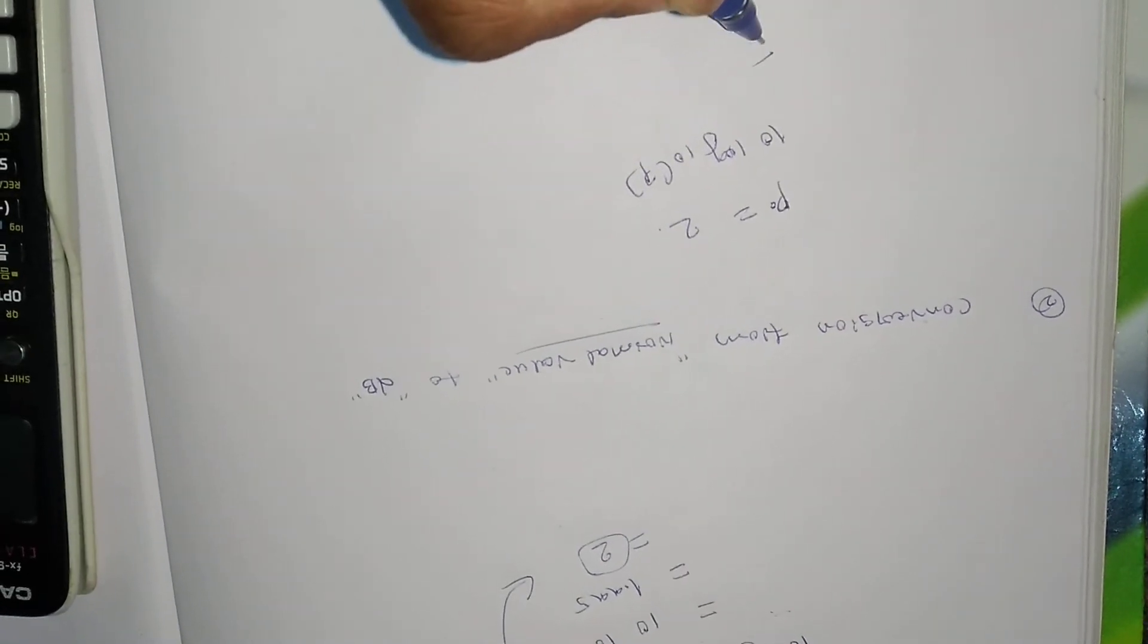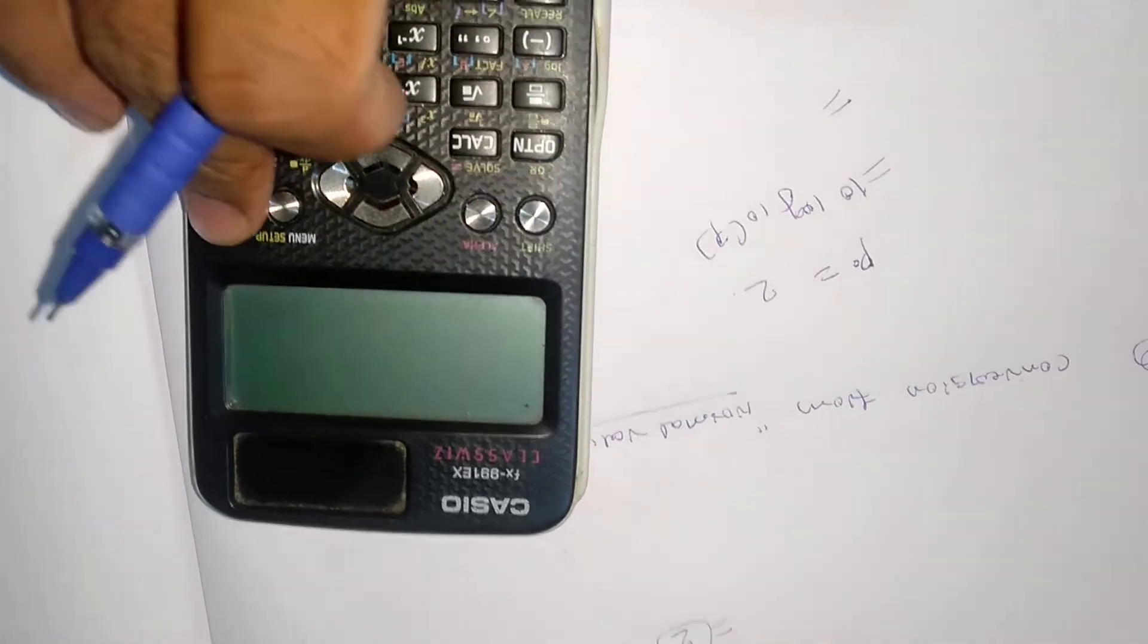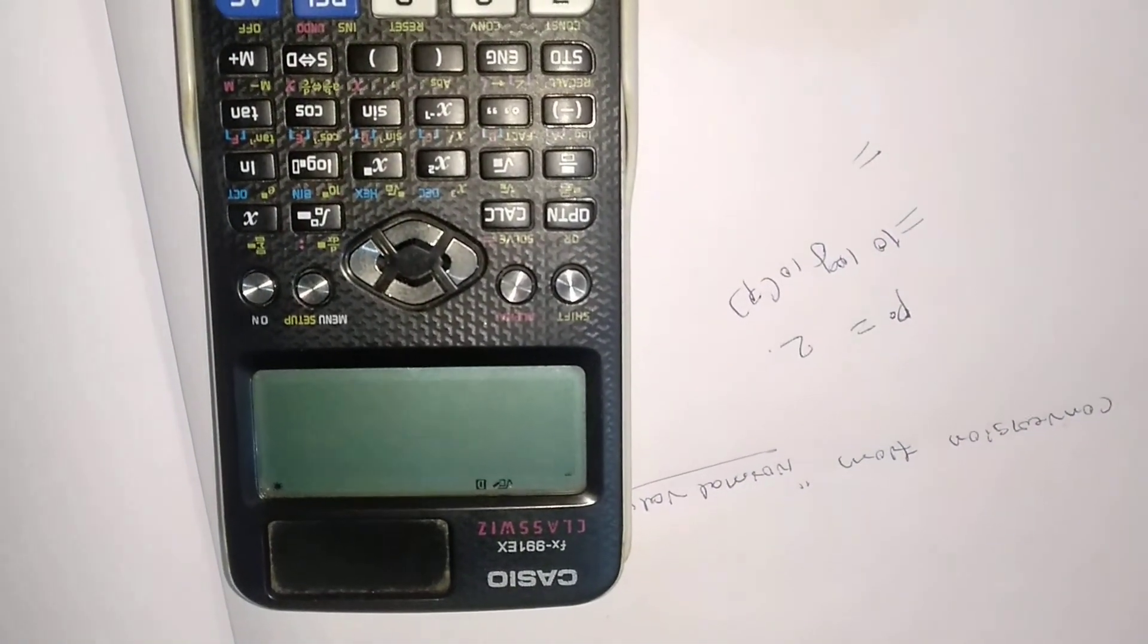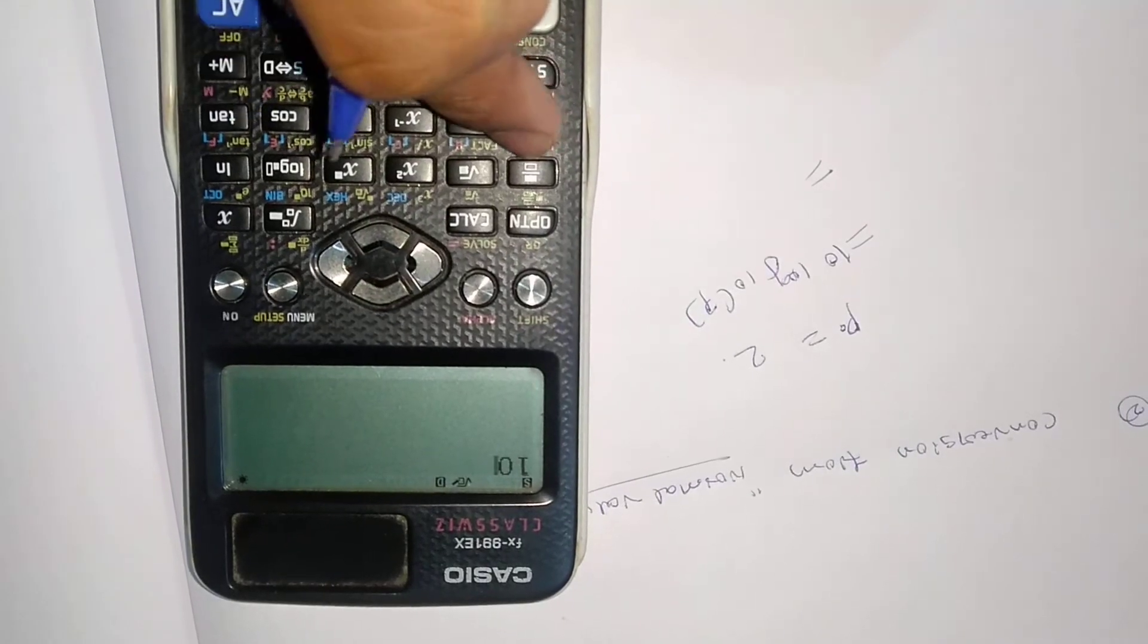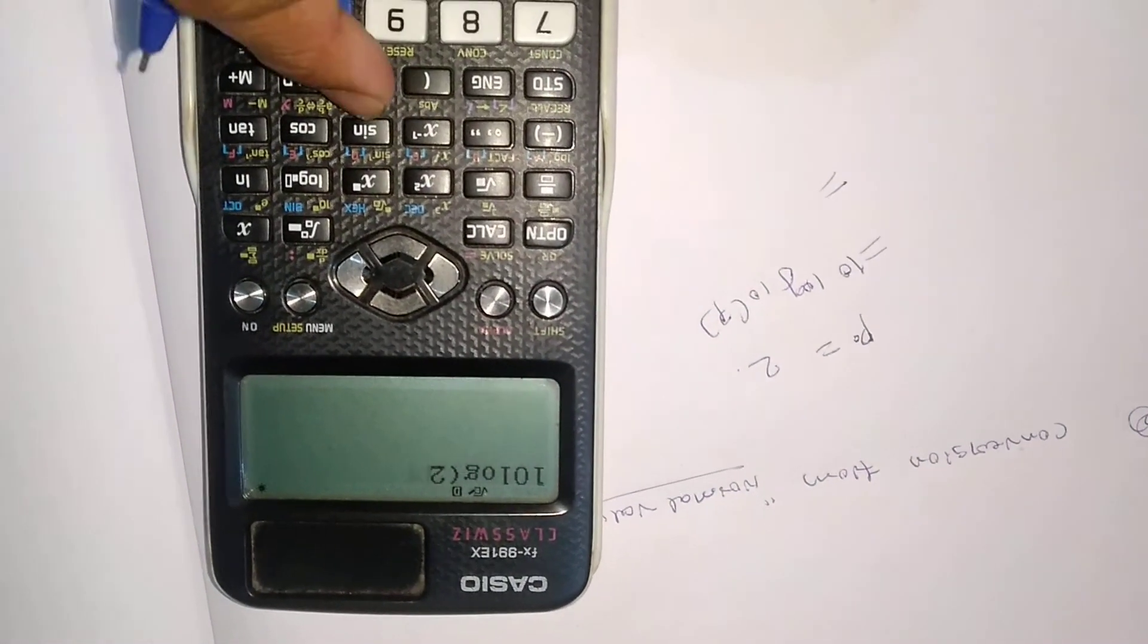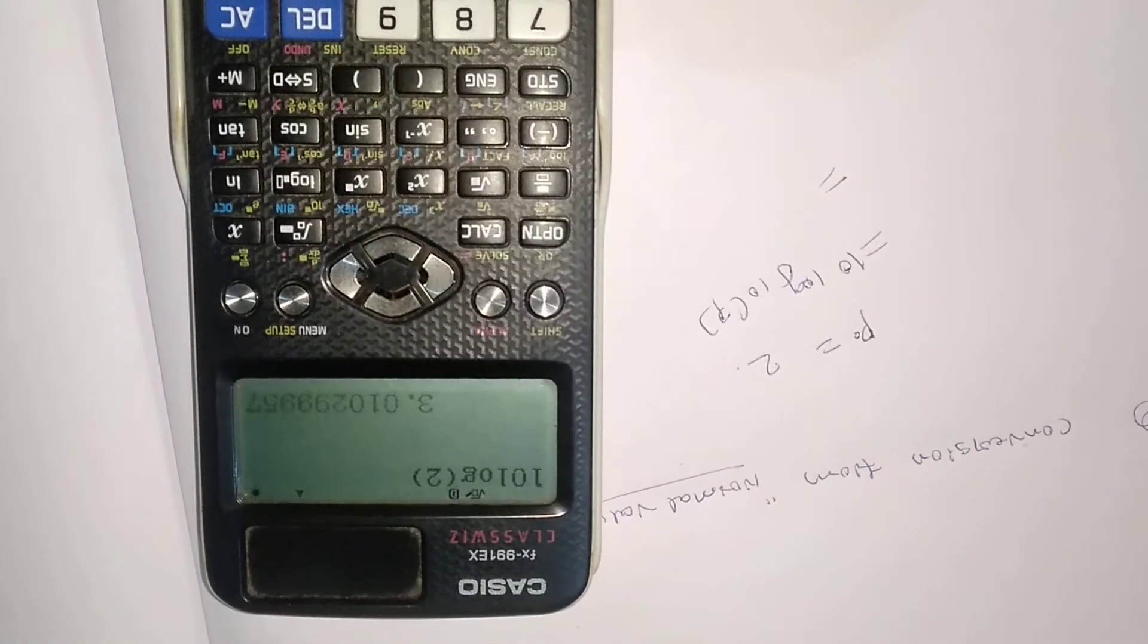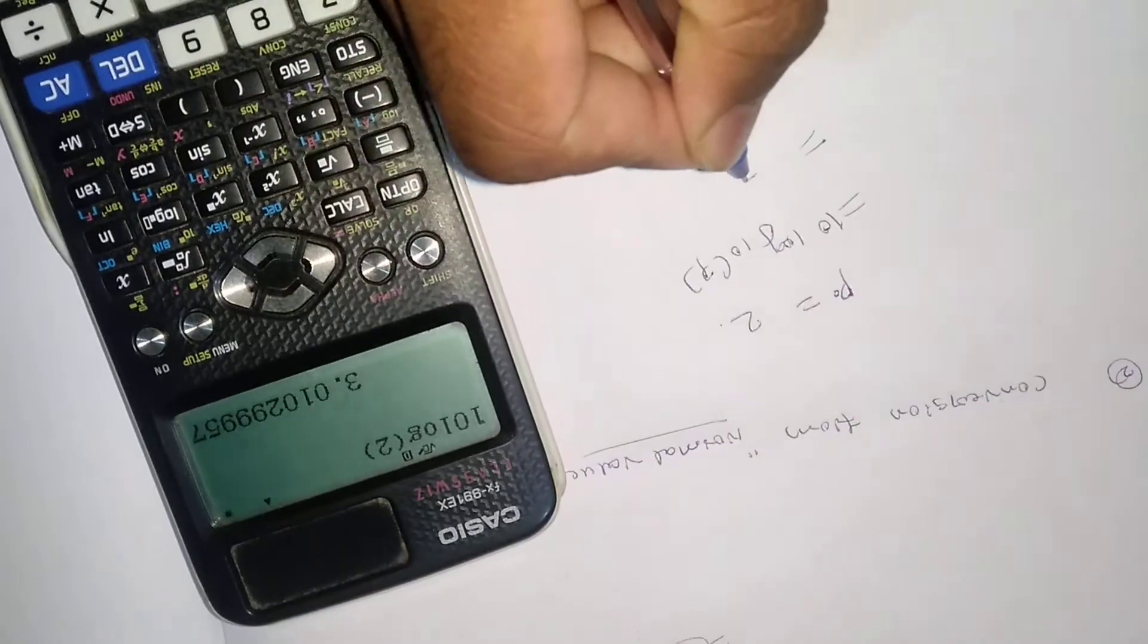So how I will be doing this will be equal to 10 log 10 of power. So let me just do that one - 10, then we'll just write log here, then power is given as 2 so just put it as 2. Then if I hit enter you can see 3.01.